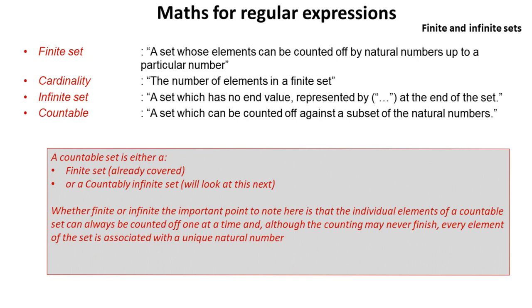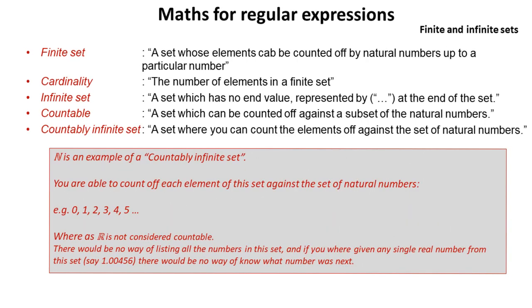We then have countable. That's a set which can be counted off against a subset of all the natural numbers. Countable sets are either finite, which we've looked at already, or a countably infinite set. Whether a finite or infinite set, the important point to note here is that the individual elements of a countable set can always be counted off one at a time. Although this counting may never finish in the sense of a countably infinite set, every element of the set is still associated with a unique natural number. So just to clear that up, here's a countably infinite set. It's a set where you can count off the elements against the natural numbers, but it goes on forever. A good example of this is the set N. You're able to count off each element against the natural numbers. The set goes on forever, but we can say the first number is 0, then 1, then 2, then 3. We always know what the next one's going to be, so we can count them off.